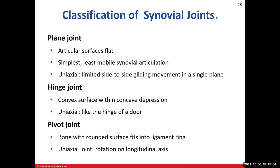A hinge joint — think of a door hinge — is also uniaxial. A pivot joint, seen in supination and pronation, involves one bone rotating around another. For example, the head of the radius sits on the capitulum of the humerus and rotates around it, giving us pronation and supination.